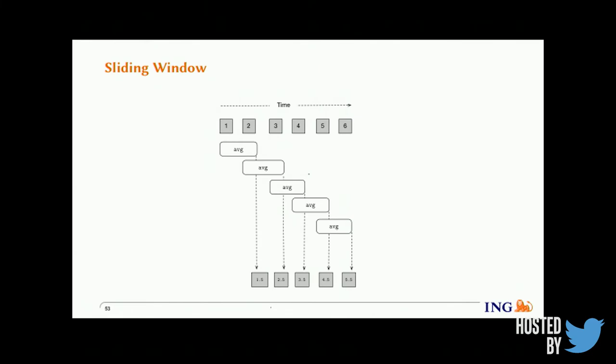The second kind of window is the sliding window, where it slides and overlaps over time — the window can contain the same messages as it slides. A sliding window can overlap in time, so a message can be collected in multiple windows.